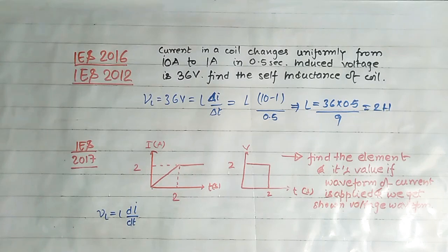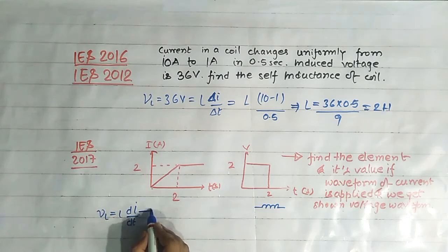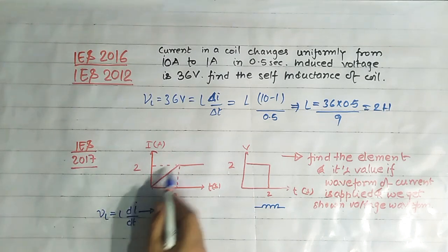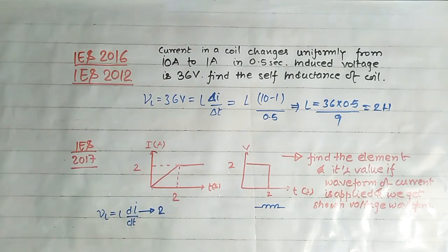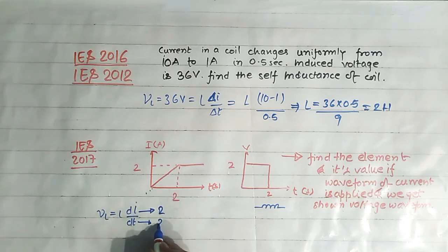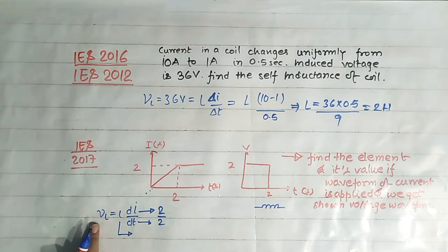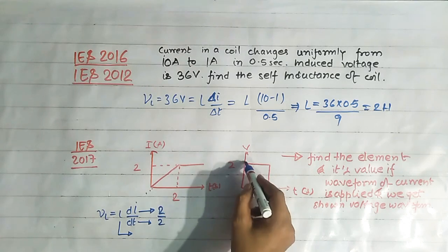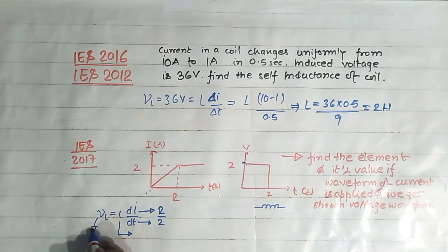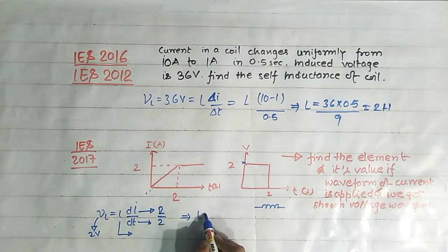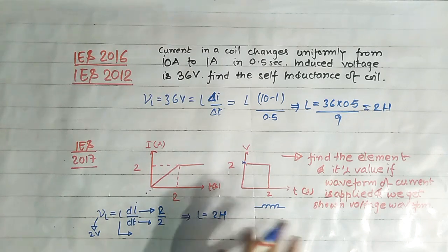So this element must be an inductor. The change in current di is 2 amperes over a change in time dt of 2 seconds, giving di/dt equals 1. The voltage obtained is 2 volts, so solving VL equals L times di/dt gives L equals 2 henry. This is the answer — a very easy question once you know the concepts.